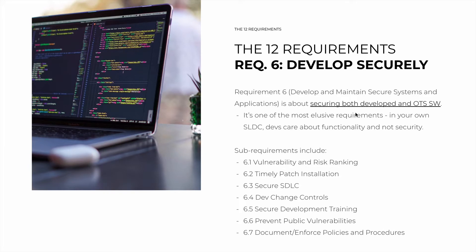For one simple reason: in your own software development lifecycle, developers usually care about functionality and not security. They usually want to create interfaces, structure highly efficient database queries, create lightning-fast caching mechanisms, but they're usually not very excited to check for security features, encrypting communications, avoiding cross-site scripting, buffer overruns, and so on. In fact, many development teams don't even know about these — or they do, but they don't care. This requirement forces you to put security features into practice.